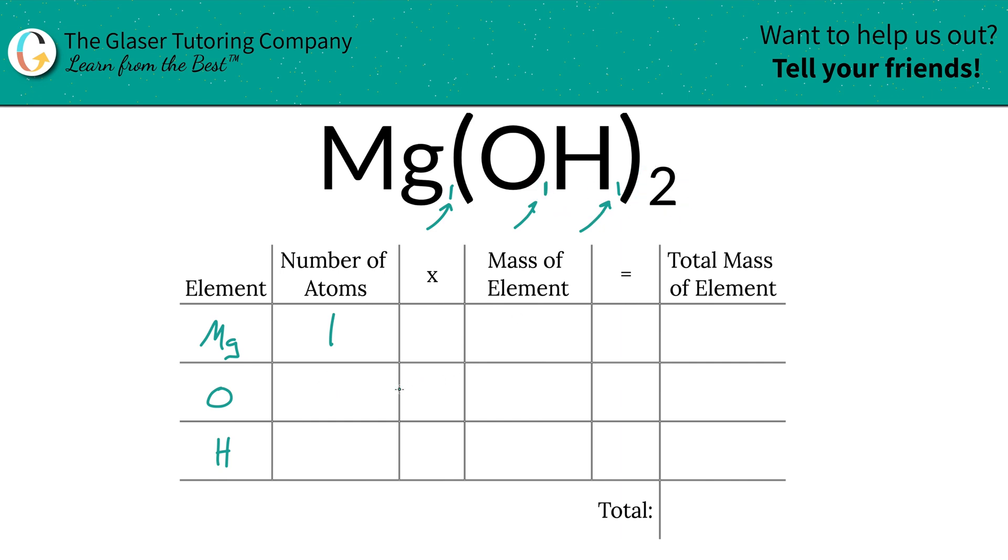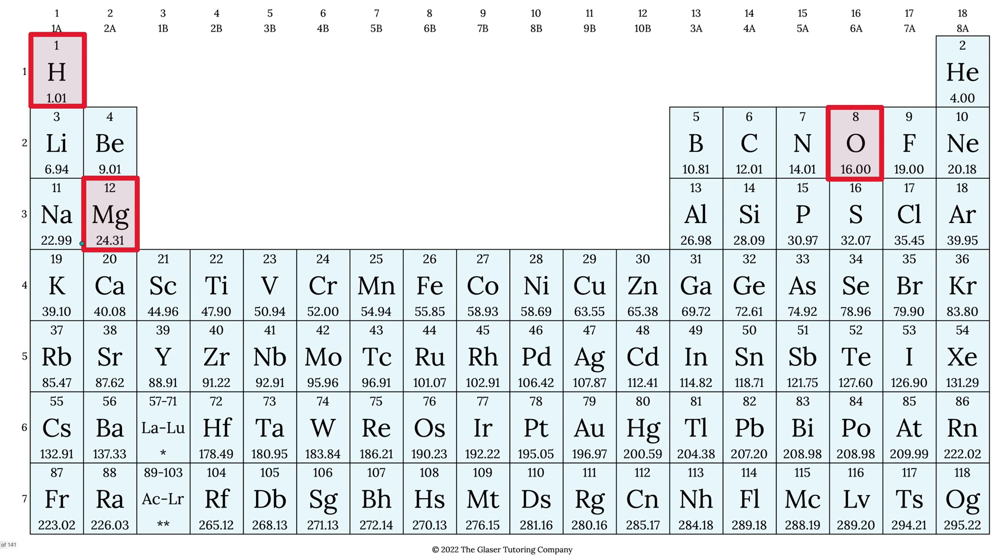The shortcut is take the inner subscript of oxygen and multiply it by the outer. Same thing for hydrogen: one times two is going to be two, so you get two hydrogens in total. Then you're going to take those number of atoms and multiply it by the mass of each particular element.